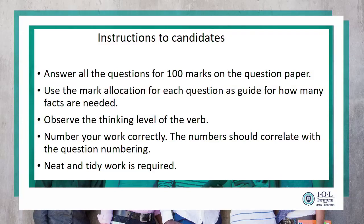Number one: answer all the questions for 100 marks on the question paper. You answer all the questions — there is no 'choose one of the two' or 'choose two of the three.' You answer everything. Then use the mark allocation for each question as a guide for how many facts are needed. Please let the number of marks allocated guide you as to how much to answer. A ten-mark question — do not state two sentences for ten marks. Look at the mark allocated before you answer.